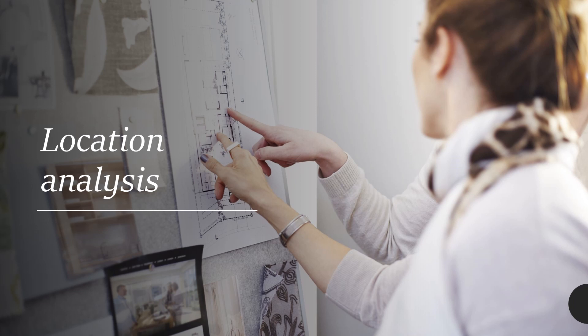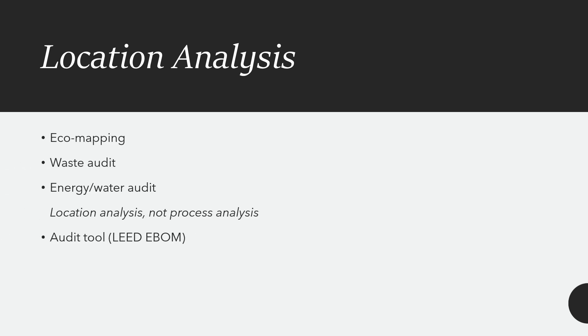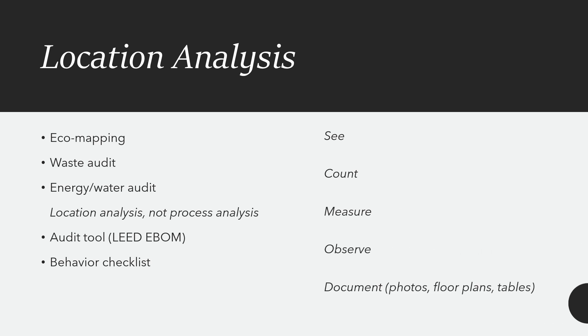Location analysis can be useful for many types of sustainability audits, from energy, water, and waste, to transportation, supply chain, and landscaping. Some of the ways you analyze a location is through eco-mapping, physical counts, and behavior observations. See the layout, count what's there, measure what's used, observe behaviors, and document using photos, floor plans, and tables.